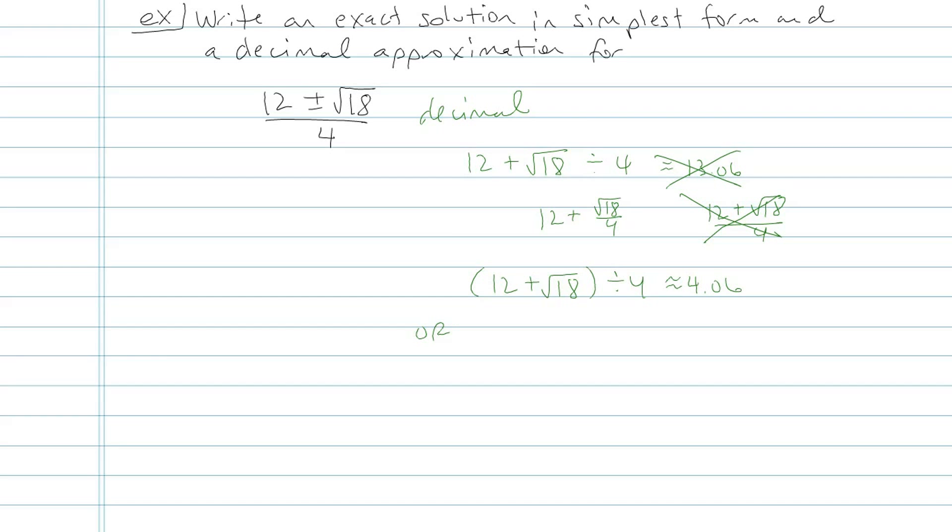Or a good way to do it is to do 12 plus root 18 first, hit the equal sign, and then when you keep that answer on the screen, then hit divided by 4. So that's one way to get the decimal approximation for that guy.